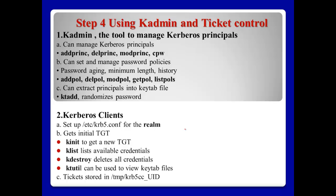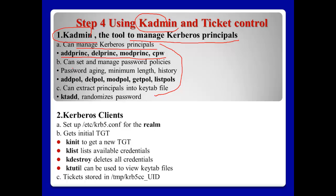If you successfully install all the cover packages, you can use k-admin. Ticket control is in step 4. k-admin is a tool to manage cover principles. There are commands to: add principle, delete principle, modify principle, and change password. To set and manage password policies, we can use: add policy, delete policy, modify policy, get policy, and list policy. To extract the principle into a keytab file, we can use k-t add. For ticket control, we use various commands. The client system must also set up the realm configuration file — realm is a kind of domain name in the cover system.